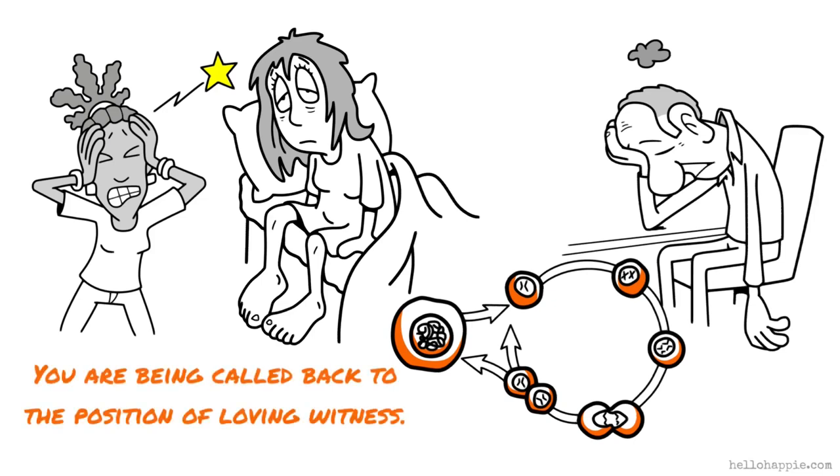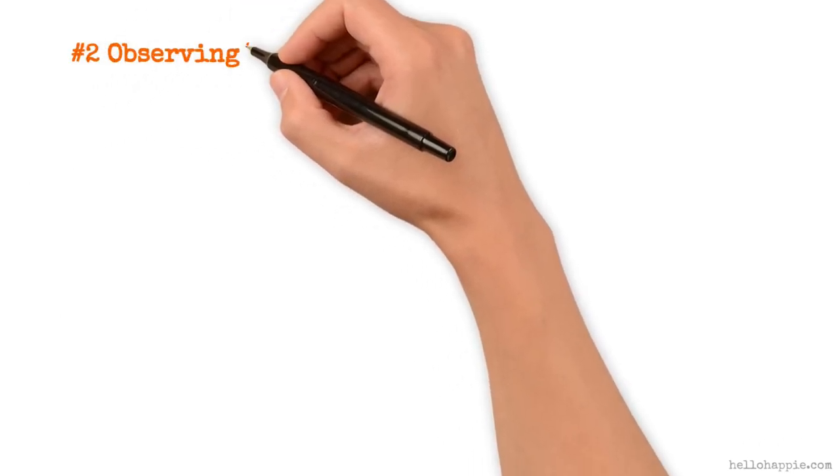The second way of observing is called observing your mind. Your mind is filled with thousands of thoughts every day. They come and they go like trains in a terminal. One enters, another takes its place, one exits and along comes another.